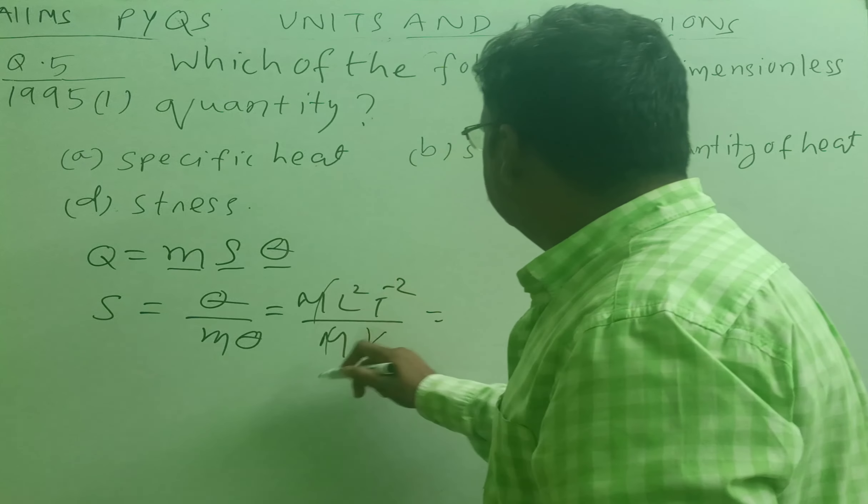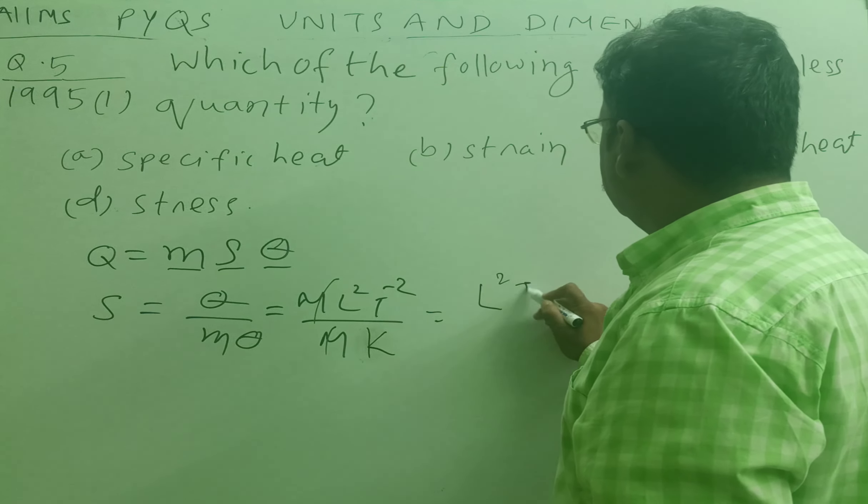The formula for S is equal to Q by M theta, and this is equal to M L² T⁻² divided by M and Kelvin K. Theta is written as K. So the dimension will be L² T⁻² K⁻¹.